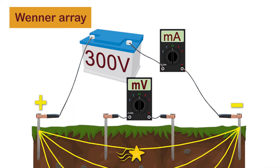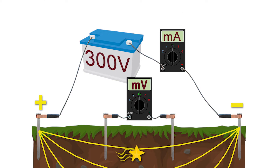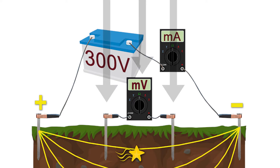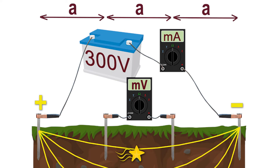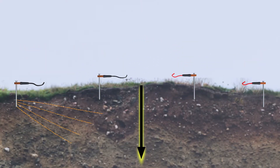Mr. Wenner discovered that the following setup, combined with some calculations, gives good results. He puts two pins far apart and connects them to a high-voltage direct current power supply, measuring the amps flowing through it. He also puts two other pins closer together and measures the voltage between them. The distance between the four probes must always be equal — let us call it A. That distance is also the approximate depth being targeted. If you want to measure deeper, simply increase distance A and move all four pins further apart.